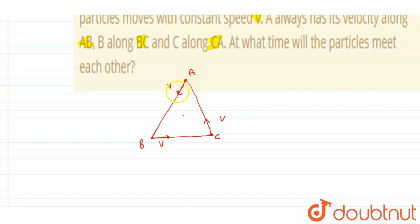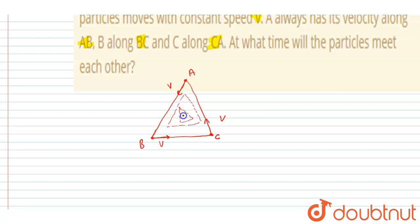What will happen is the triangle will rotate as well as the side length of the triangle will decrease. After some time the triangle reduces, and reduces more, and they will meet at the center.